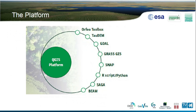QGIS is the main platform of the toolbox. But the actual processing — the analysis and pre-processing of the data — is based on algorithms coming from many other open source projects. You're probably familiar with most of them, but maybe some people don't know Snap, which is the Sentinel Application Platform — a toolbox developed specifically for analyzing Sentinel satellite data. Beam at the bottom is an older version of Snap. We have to use it because we are also working with historical data from the ENVISAT satellite, and not all the functionality was transported to Snap. There are also some custom R scripts and Python scripts written to fill in the gaps where existing algorithms couldn't perform the required function.